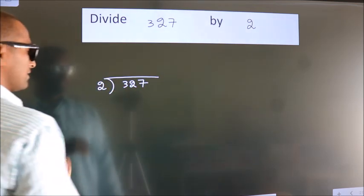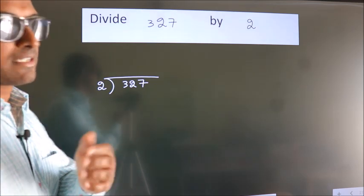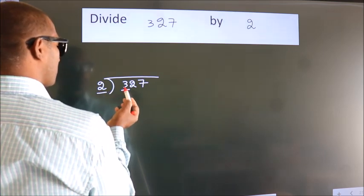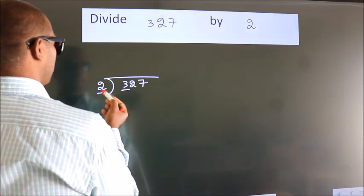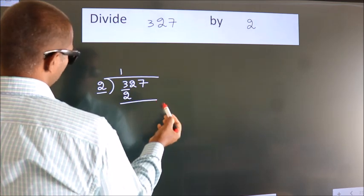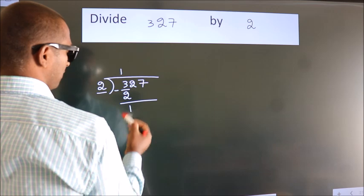This is your step 1. Next, here we have 3, here 2. A number close to 3 in the 2 table is 2 ones are 2. Now we should subtract. We get 1.